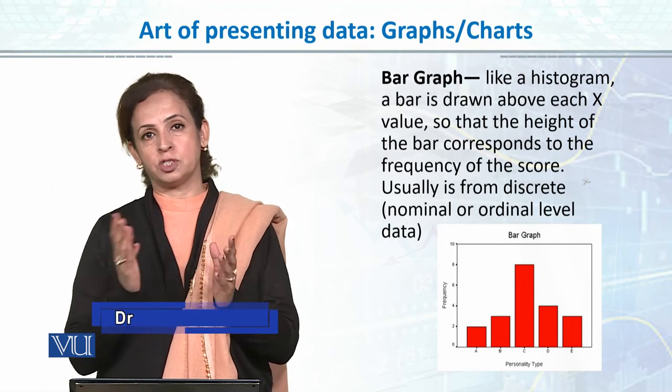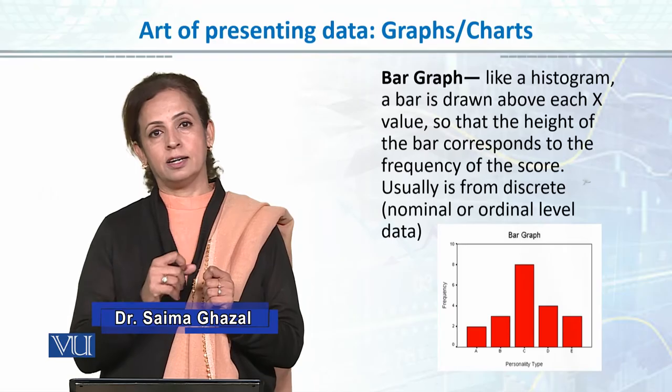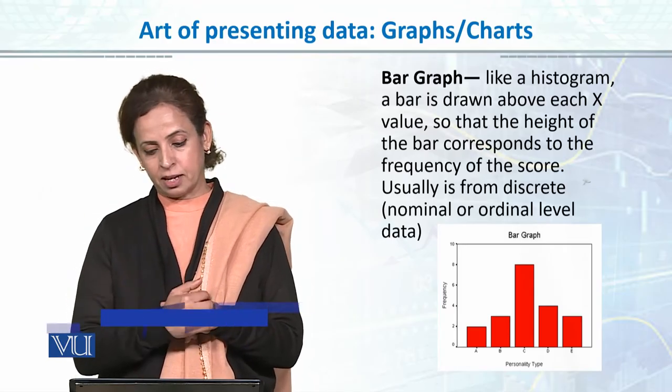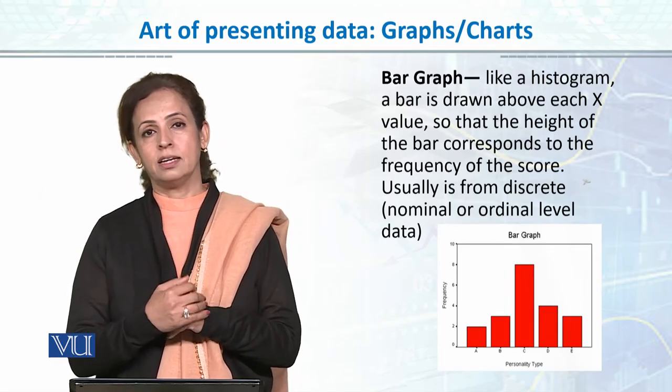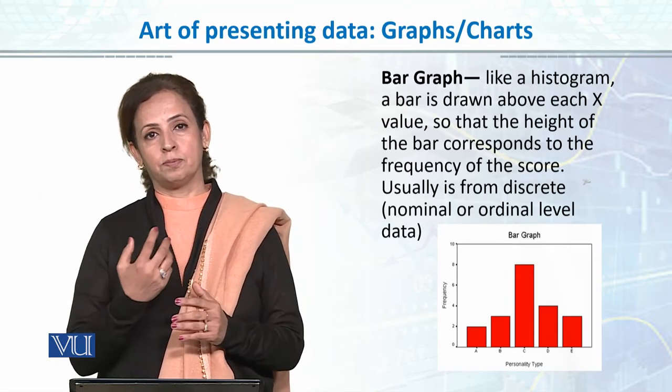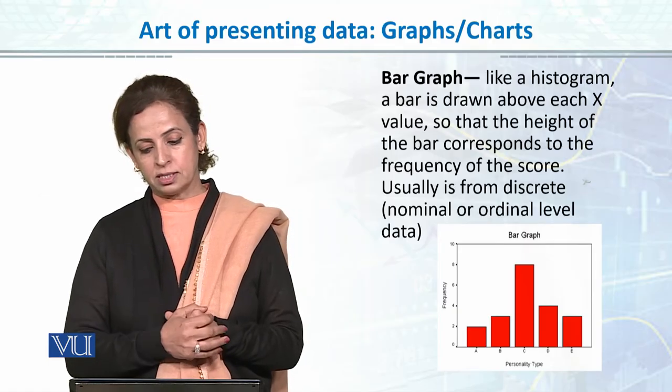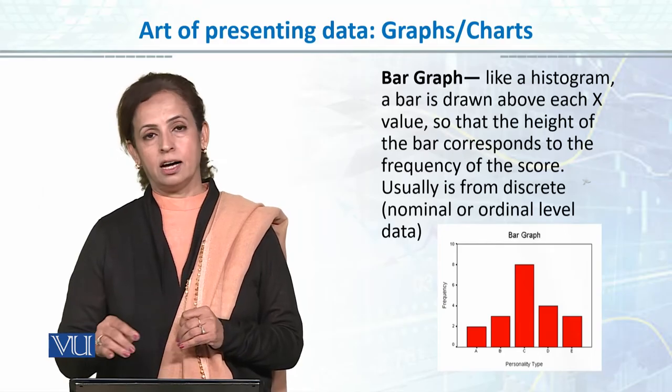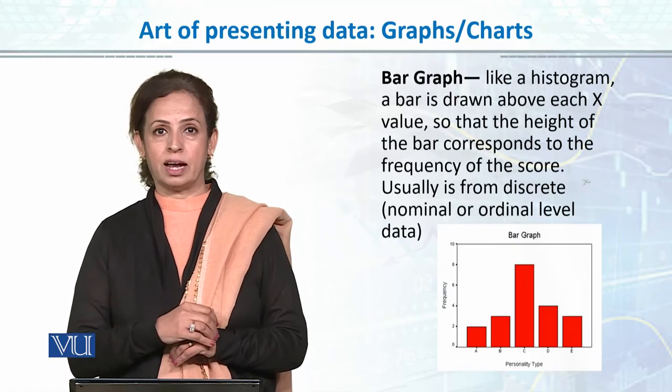There is a space between the bars, which means each bar represents a separate category. For example, if we want to see socioeconomic status and achievement scores, these five bars represent lower, middle, and upper classes.